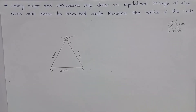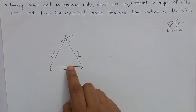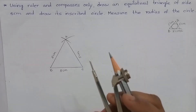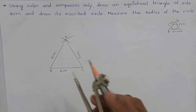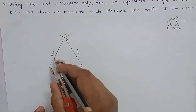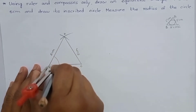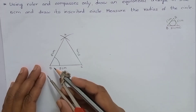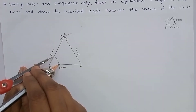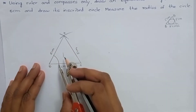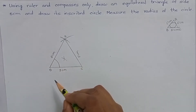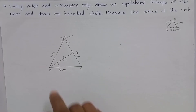Now we have to construct an inscribed circle for this triangle. To do this, we have to take the angle bisector of any two angles. You can take the compass of any measurement of your choice. Keep the compass at point B and draw an arc. Then keep the compass at each intersection point and cut arcs. Join these two points. We have bisected angle B.